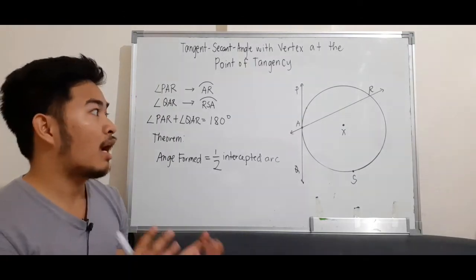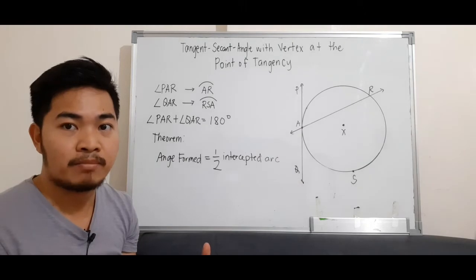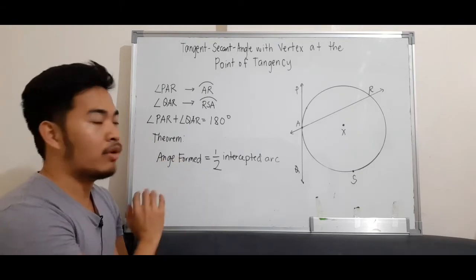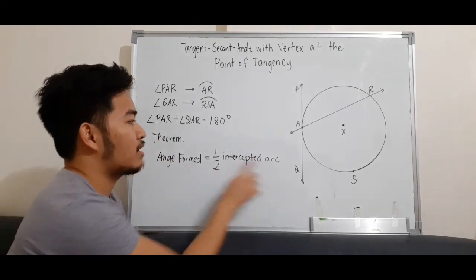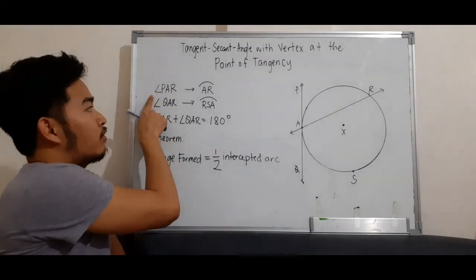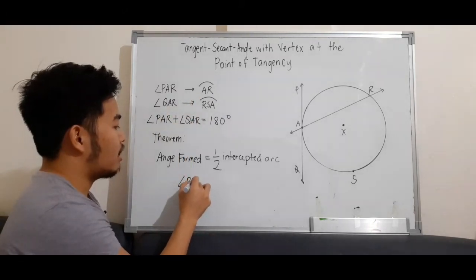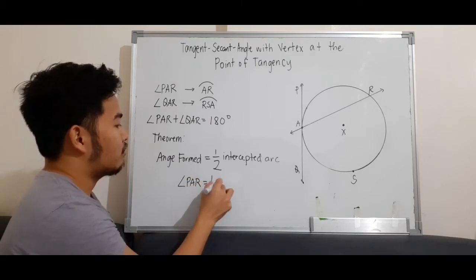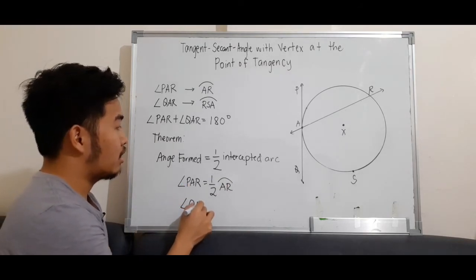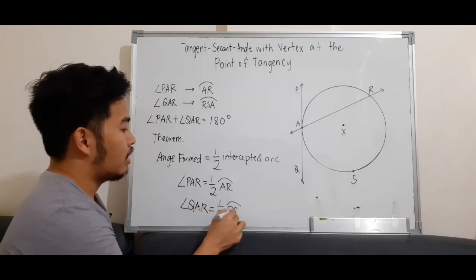Now, what is the property of the angle formed by a tangent and secant with vertex at the point of tangency in relation to their intercepted arc? We have this theorem: the angle formed by a tangent and secant with vertex at the point of tangency is equal to half the measure of its intercepted arc. So we can say that angle PAR is equal to one half of arc AR, and angle QAR is equal to one half of arc RSA.